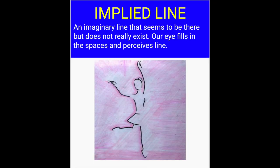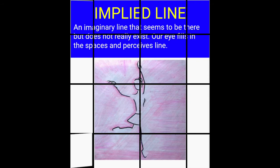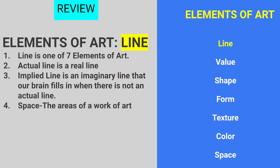Implied line is an imaginary line. You kind of see it with your eye even though it's not really there — your eye fills it in for you. We've done our review, and we're going to move on to some new ideas. We'll do a thorough investigation of the elements of art, talking more about line and space. You're going to need to understand these elements so that you can make intelligent choices about what you want to achieve in your art.